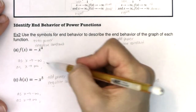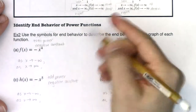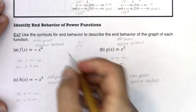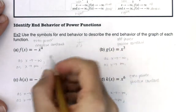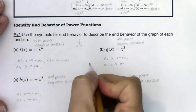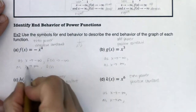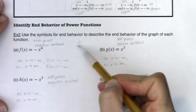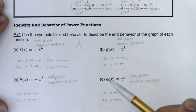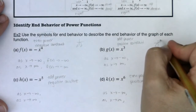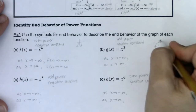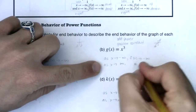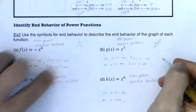Before writing the f of x notation, sketch the function mentally. For negative x to the fourth, both ends are down, so as x goes to negative infinity, f of x goes to negative infinity; and as x goes to positive infinity, f of x also goes to negative infinity. For x cubed, it's a toolkit function — left end down, right end up — so f of x goes to negative infinity on the left and positive infinity on the right.